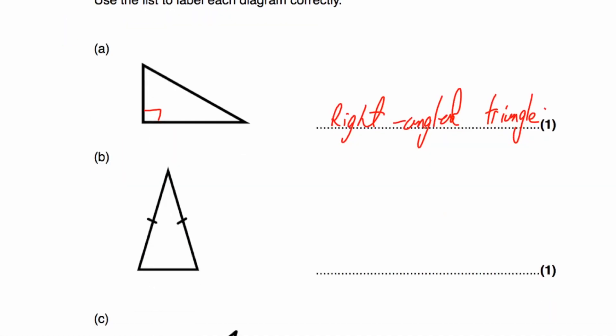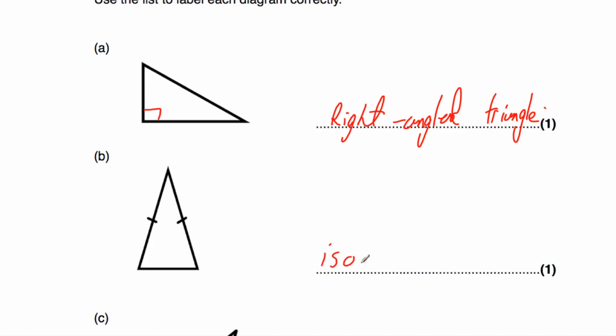Next one. As you can see, we've got a triangle and it's got two little dashes which show that this side and this side are the same length. As two sides are the same length, that means it's an isosceles triangle. So isosceles.